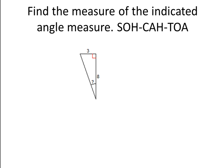Next one — we're solving for the question mark angle. We have 3 as the opposite and 8 as the adjacent. SOH-CAH-TOA — the trig function with O and A is tangent. So tangent of theta equals opposite over adjacent, substituting in 3 and 8. This is our trig ratio, but now we're not going to stop here — we're going to continue and solve for the actual angle.